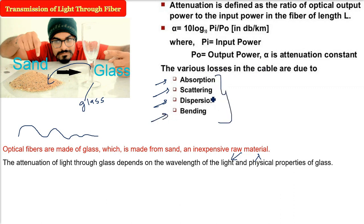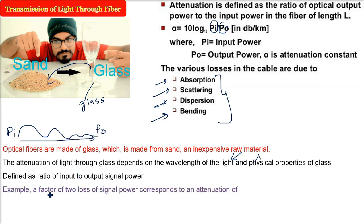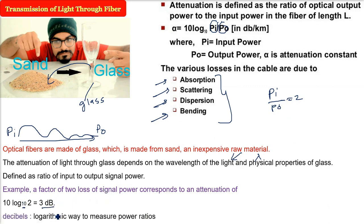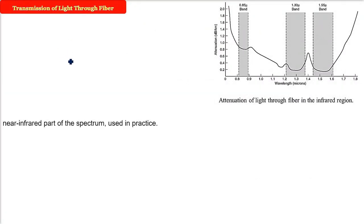Losses are computed in decibels (dB): attenuation in dB = 10 × log₁₀(PI/PO), where PI is input power and PO is output power. A factor of 2 power loss equals approximately 3 dB. Three wavelength bands are commonly used for optical communication: 0.85 microns (used first, higher attenuation, but allows gallium arsenide electronics), 1.30 microns, and 1.55 microns — the latter two have good attenuation properties (less than 5% per km). Each band has a width of 25,000–30,000 GHz.